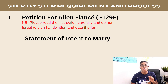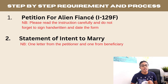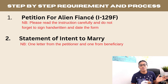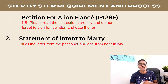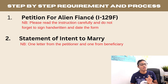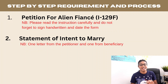The next step is a letter of intent to marry. You and your fiancé each need to write one letter — one from the petitioner and one from the beneficiary. This is to show that your marriage is genuine and that you intend to marry. A simple letter is enough. The paperwork must be handwritten and signed; USCIS does not accept electronic signing.